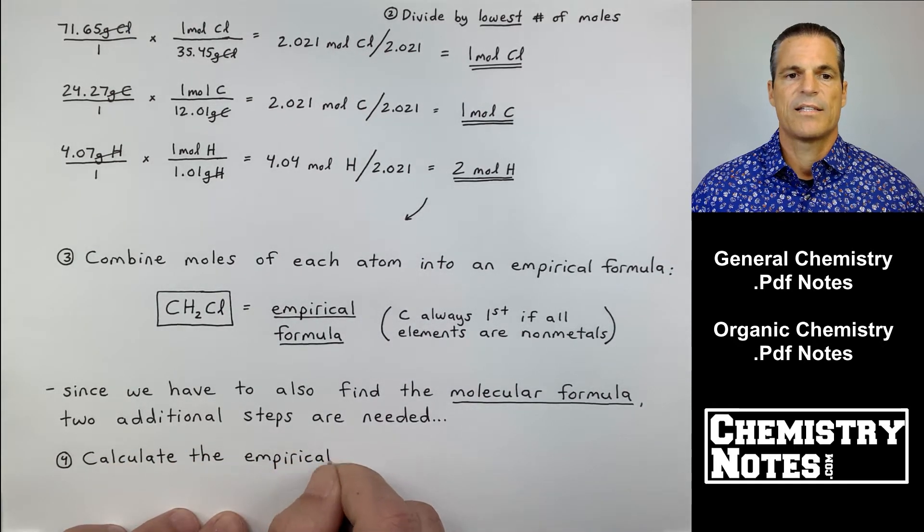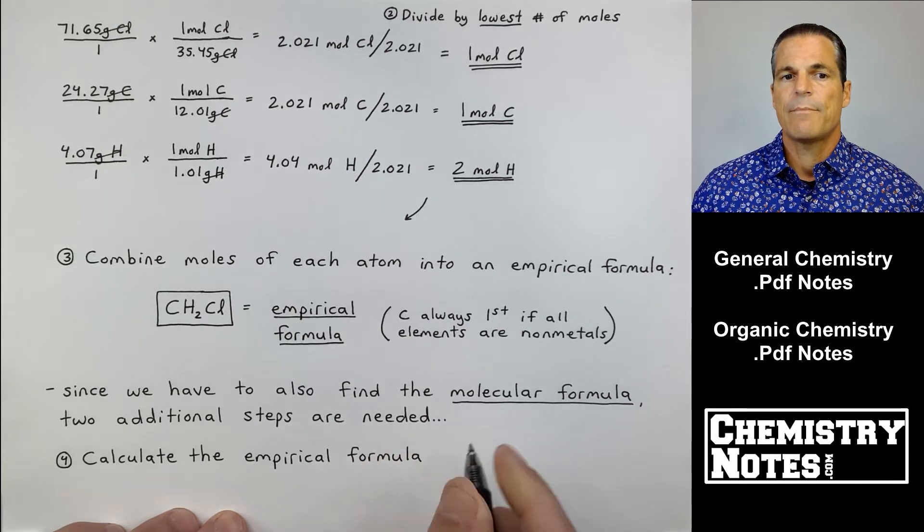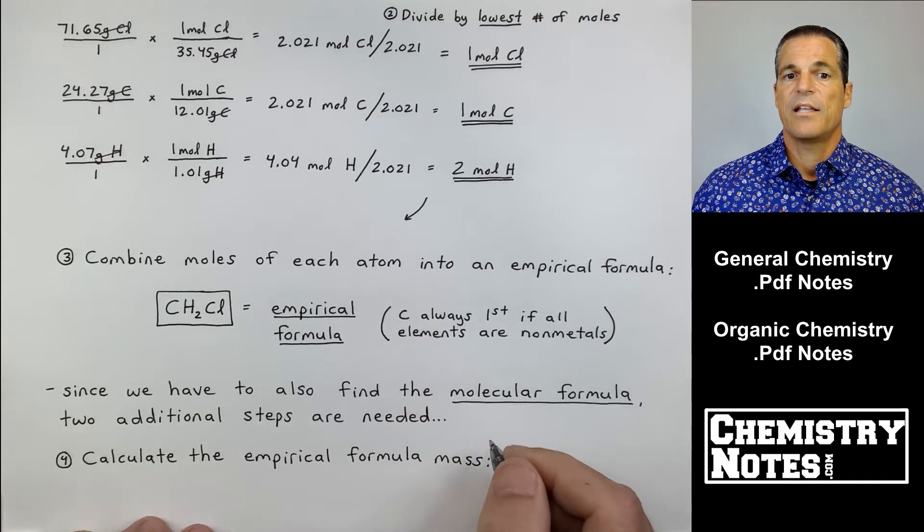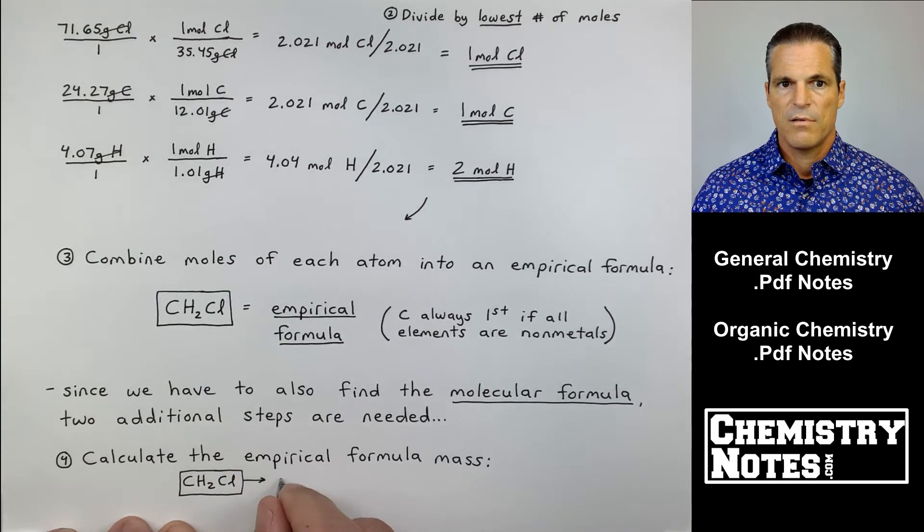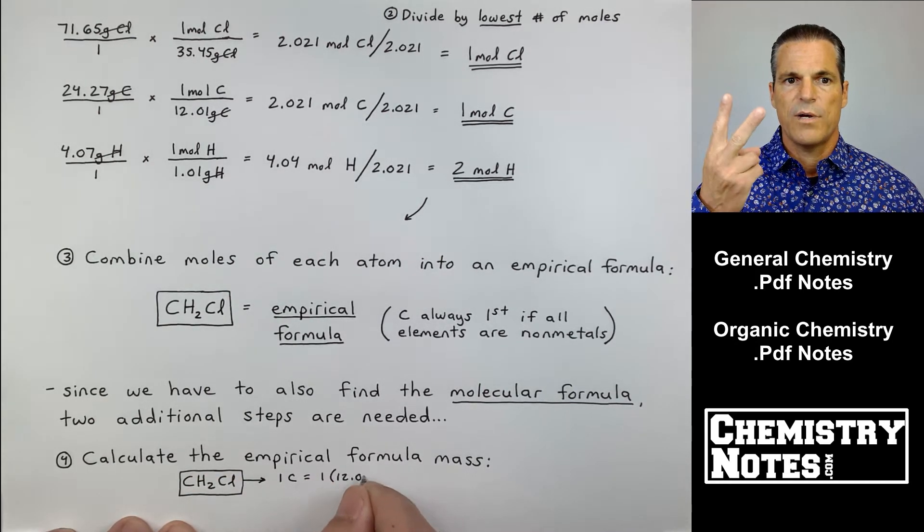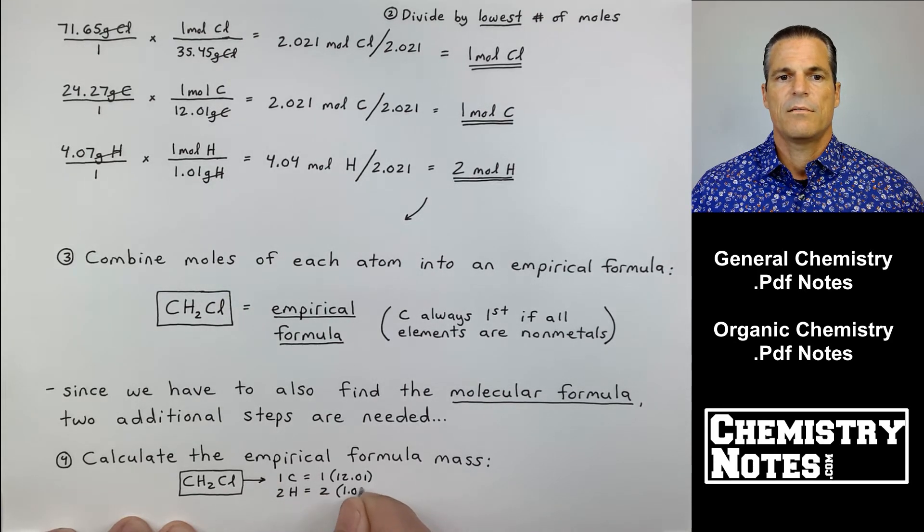Step number four says calculate the empirical formula mass, because we didn't have that. We just found the empirical formula. Let's add up one carbon, two H's, and one Cl. The empirical formula mass is 1 times 12.01 plus 2 times 1.01 plus chlorine, which is 35.45.